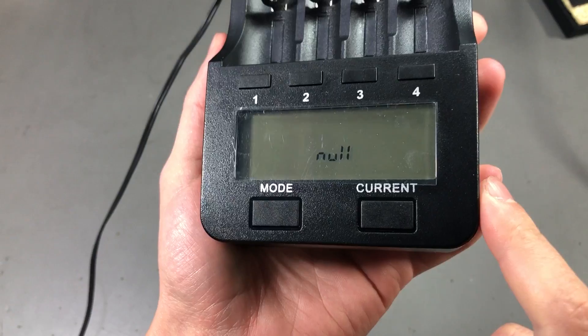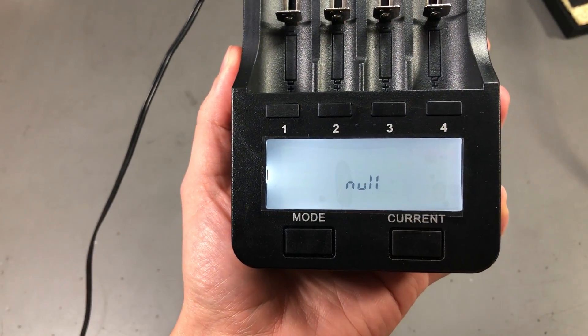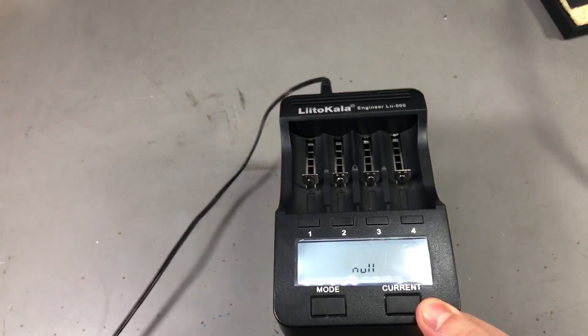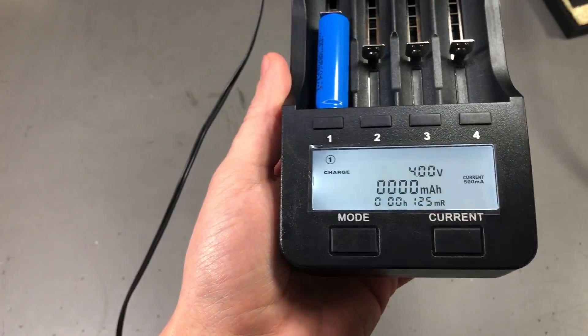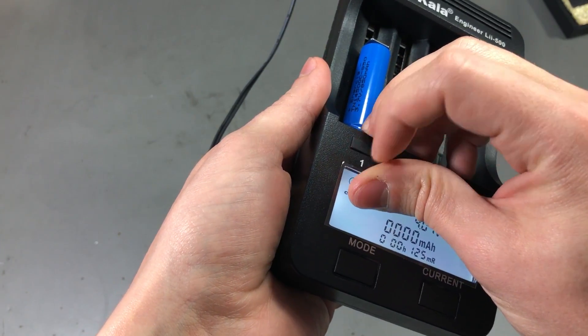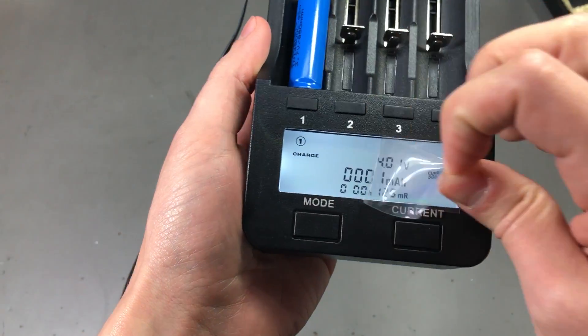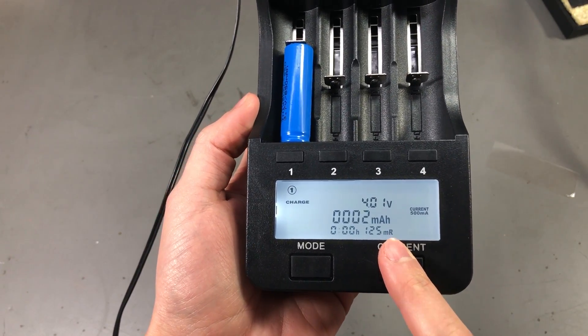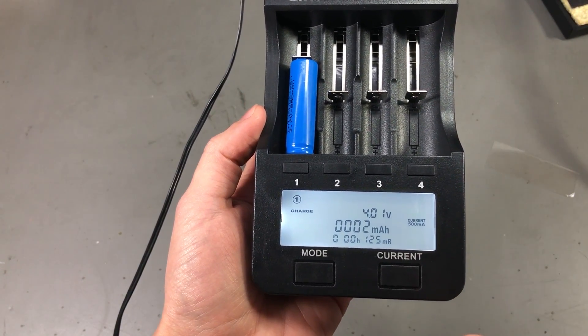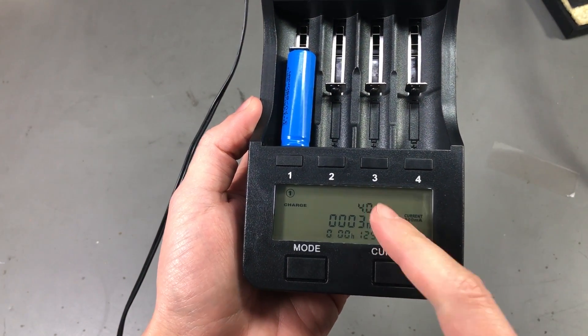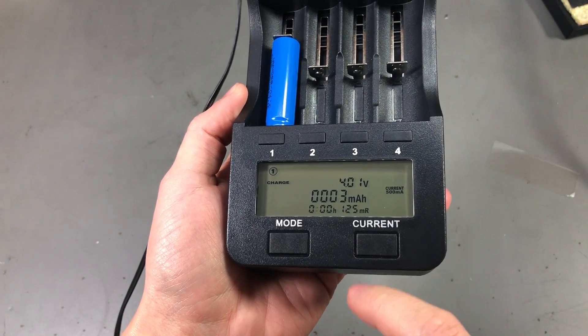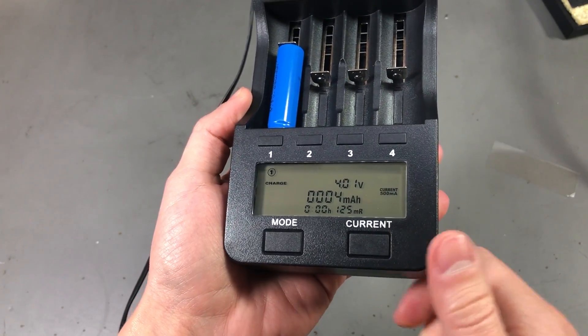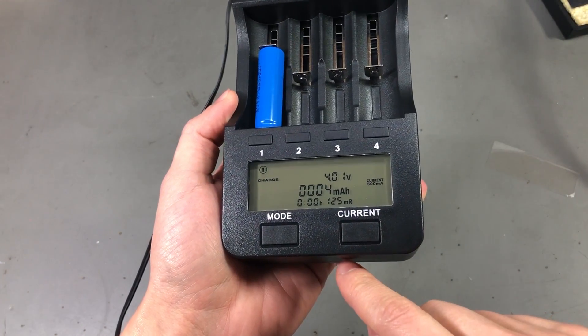It has a backlit LCD that shows information about the battery voltage. Let me plug in a battery to better show you this. Let's get the protection film from this LCD. So this is the information you get on screen when a battery is inserted: you get the battery voltage, the charging capacity, the time, the internal resistance of the battery, the charging current. Quite a lot of info on this LCD.